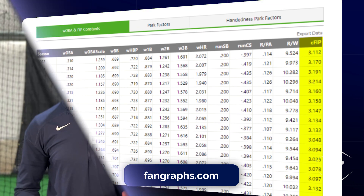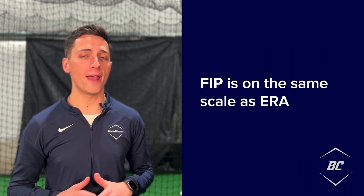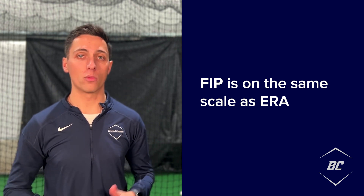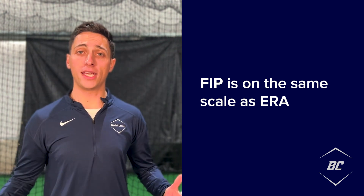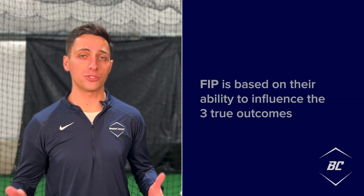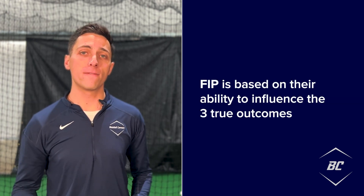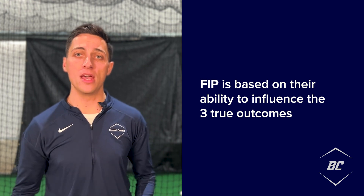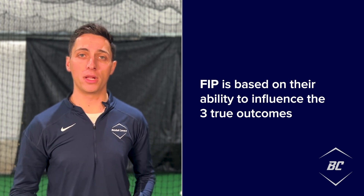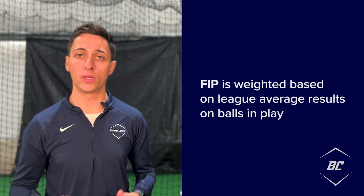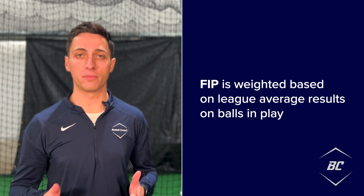While the equation may look complicated, what you need to know is that FIP is meant to look and feel like ERA, which is already familiar, where lower is better. Unlike ERA, which tells us how many runs a pitcher actually gave up, FIP instead tries to calculate what a pitcher's ERA should have been based on their ability to influence the three true outcomes, with league average results on balls in play.